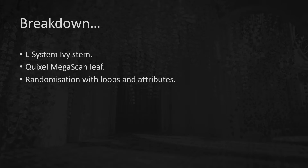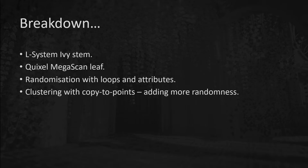Then we'll bring those two systems together using attribute randomization, loops, and a few attributes to create some nice randomness that would be very difficult and time consuming to do manually. Once we've got our ivy stem, frond, or leaf, we'll then look at ways we can cluster those together, adding more layers of randomness on top, so we get a different look every single time with very minimal effort once the procedure is in place.